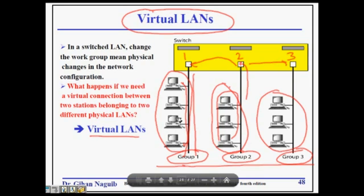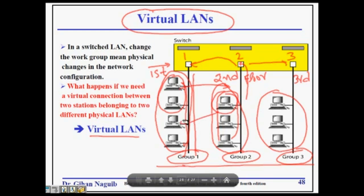Let's say this is the first floor of the building, the second floor, and the third floor. Physically, only engineers are on the first floor, marketing people on the second floor, and management on the third floor. But what happens if two people are transferred to the second floor, one marketing person moves to the first floor, and a manager wants to come to the marketing floor and another to the engineering floor? In that case, how do we maintain groups even though people are at different physical locations? This is where Virtual LAN helps.